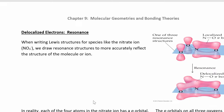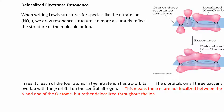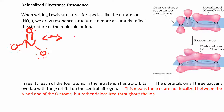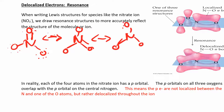Now let's look at resonance structures and delocalized electrons. For NO₃⁻, we draw the Lewis structure with nitrogen and a double bond to one oxygen, but we could move that double bond to another oxygen. The real structure is a hybrid of all of them — the extra double bond character is shared throughout. Localized means the electron pair is stuck in one place; delocalized means it's spread out evenly among all the oxygens.